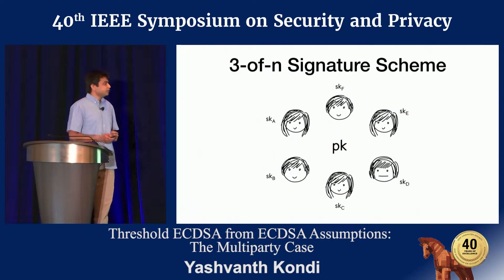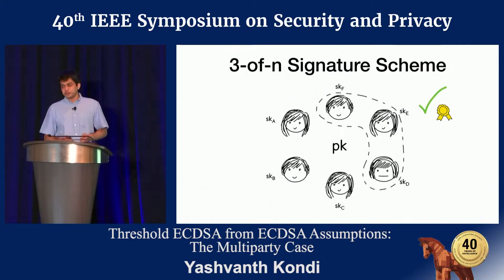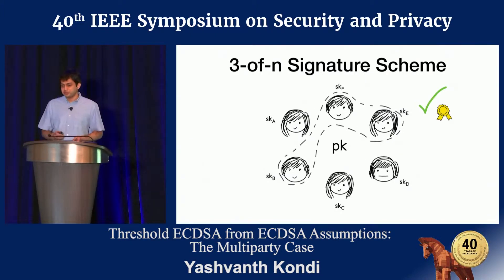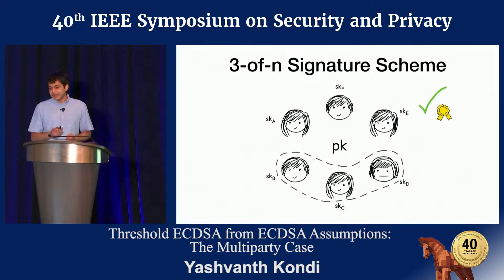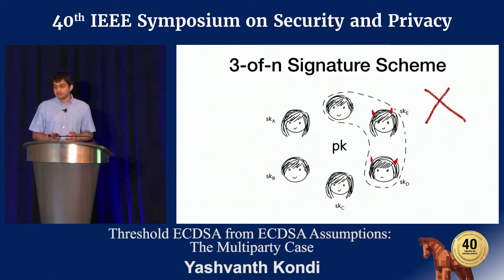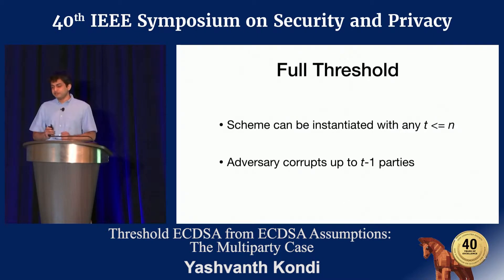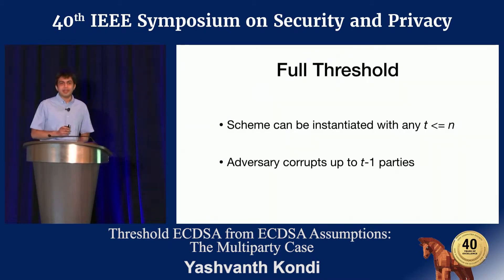For instance, in a three-of-n signature scheme, any consortium of three parties should be able to produce a signature. At the same time, no two parties should be able to collude to force a third into signing something they don't want to. In a full threshold scheme, an adversary can essentially corrupt every party but one.